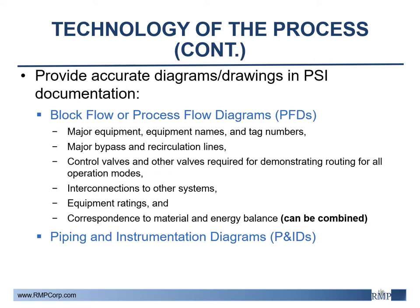Additionally, diagrams are required for this section of PSI. Block flow or process flow diagrams, PFDs, that depict major equipment, equipment names, and other critical process components must be developed. PFDs can also be combined with the system materials and energy balance, which will address requirements in the next section of the PSI program. This also includes piping and instrumentation diagrams or P&IDs, which is included in the equipment of the process section of the NDEP checklist and will be covered later in the webinar.